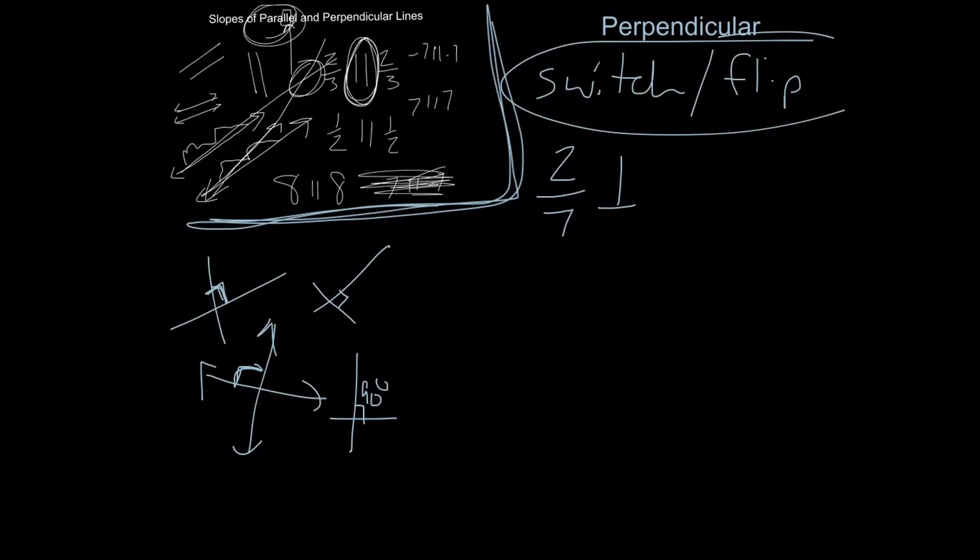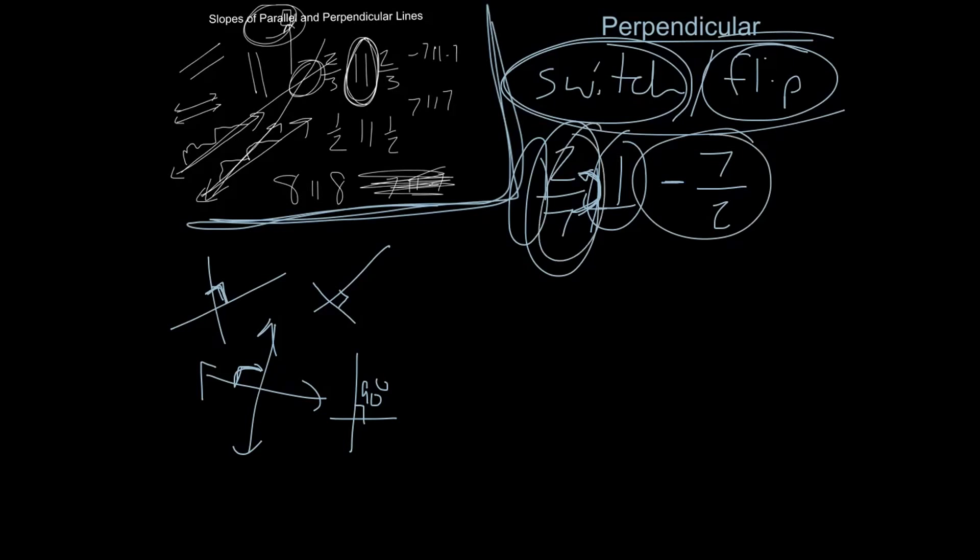Now this is the sign for perpendicular. Now let's move on to learn what the slopes look like. If the slope of one of your lines is 2 over 7, you want to know what the slope of a line that is perpendicular to that is, do the whole switch and flip. You switch the sign, which this is positive over here because there's nothing there, so you make it a negative, and then flip over the line so that 2 goes to the bottom, 7 goes to the top.